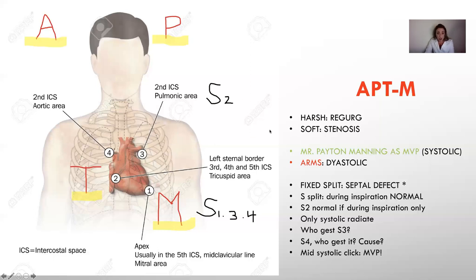So where are these sounds heard? On your diagram, when you draw Mr. Peyton Manning and put that he lives in apartment M, you're going to do your S sounds because they may ask you where S1 is best heard. Draw S1 at the bottom, S2 up top, and then S3 and S4 at the bottom. The only S that stands alone is S2 up top — all other S's are down here: S1, S3, and S4. So S2 is best heard in the pulmonic area, by the second intercostal space on the left side. This puts everything together in one diagram and makes it so much easier to remember.